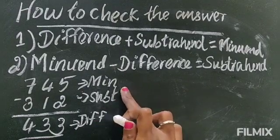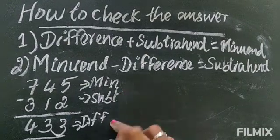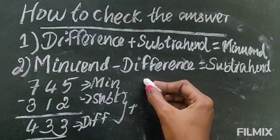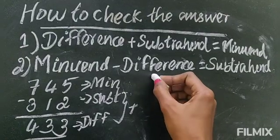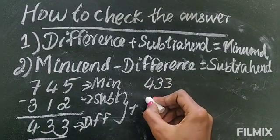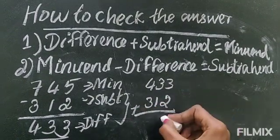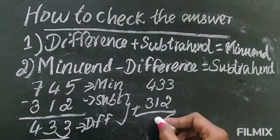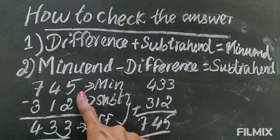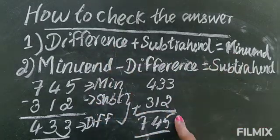So how we can check — the difference and the subtrahend, both if you add, you will get the minuend. Let's check now — adding the difference 433 and the subtrahend 312. 3 plus 2 is 5, 3 plus 1 is 4, 4 plus 3 is 7. So we have got 745, which is the minuend. We have added the difference and subtrahend and got the minuend. So your answer is correct.